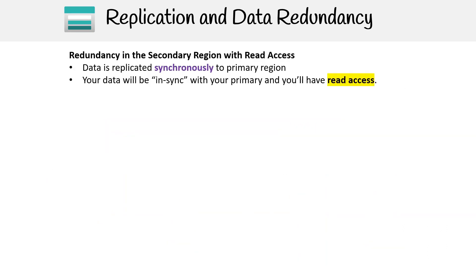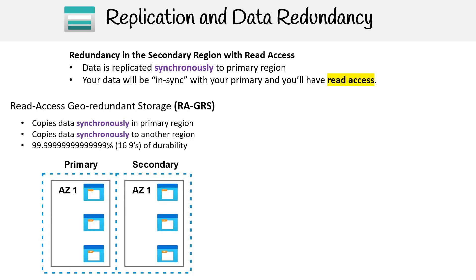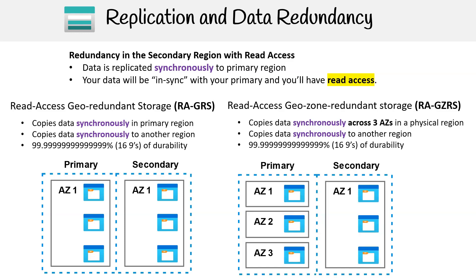For redundancy in the secondary region with read access, data is replicated synchronously to the primary region and your data will be in sync with your primary with read access available. Read access geo-redundant storage ensures synchronous data replication within the primary region and into another region, offering 99.9999999999999% — 16 nines — durability. Read access geo-zone redundant storage goes a step further by replicating data synchronously across three availability zones in the primary region before synchronously replicating to another region, maintaining the same high durability level.